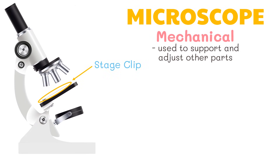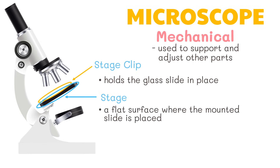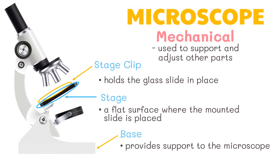The stage clip holds the glass slide in place, and the stage is a flat surface where the mounted slide is placed. Lastly, we have the base. This provides support to the microscope.